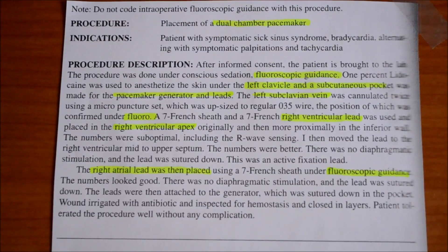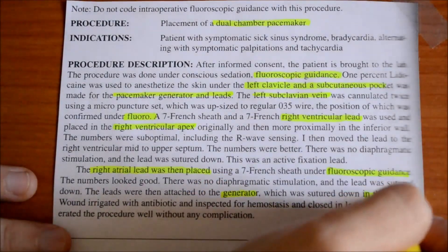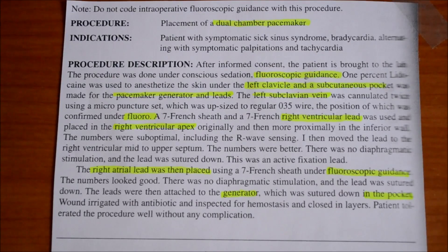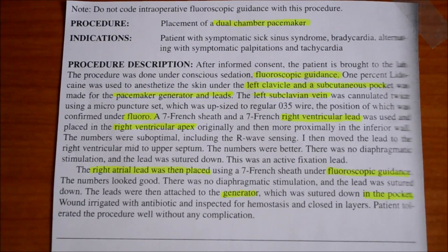The numbers looked good, there was no diaphragmatic stimulation, and the lead was sutured down. The leads were then attached to the generator, which was sutured down in the pocket. Highlight generator in the pocket — we know that the generator portion of this procedure was done in the subcutaneous tissue and fascia under the left clavicle. That is also a separate code because we are now in a separate body system: the subcutaneous tissue and fascia. Wound irrigated with antibiotic and inspected for hemostasis and closed in layers. Patient tolerated the procedure well without any complications.